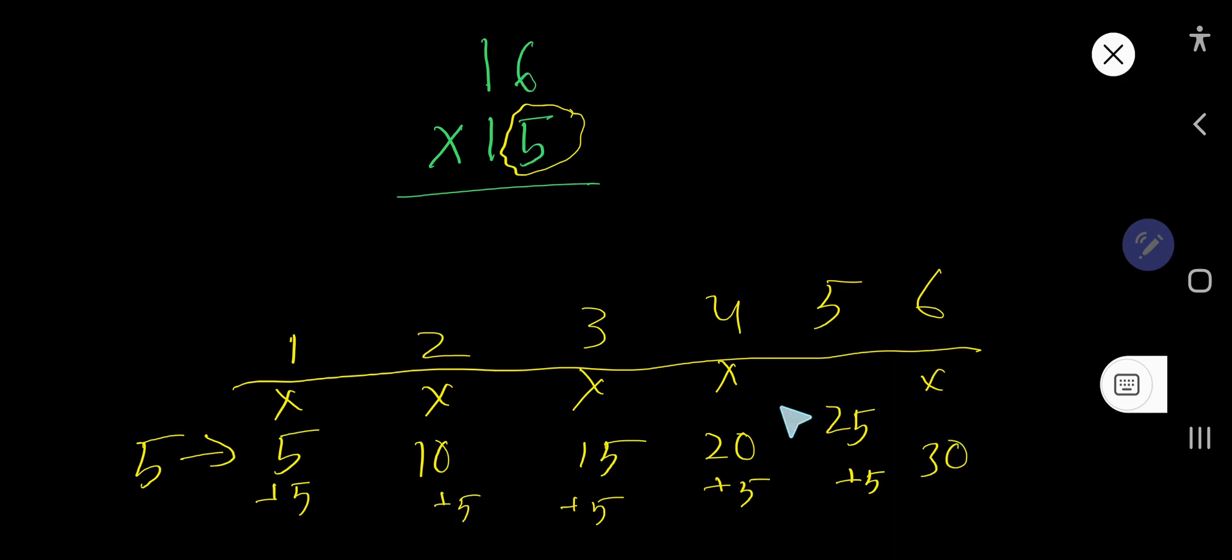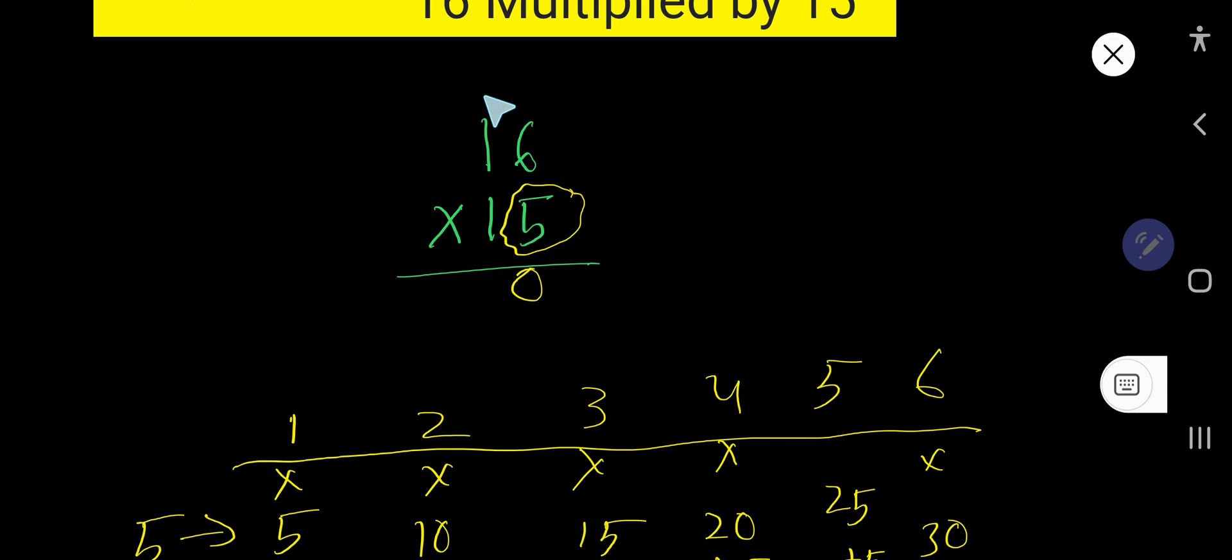Write 0 and carry 3 here. 5 times 1 is 5, plus 3 is 8. Now we have done with 5. Now we will multiply by this 1, but 1 is in the second column or 10th column.